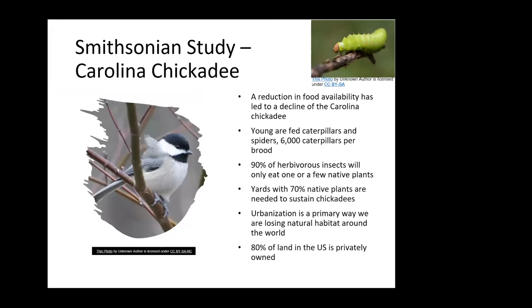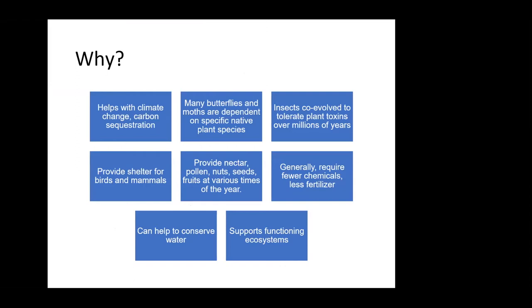Another reason to use native plants is it helps with climate change, and having trees matters too. We talked about butterflies and moths being dependent on specific native plants — they co-evolved over a long period of time. These native plants provide shelter for birds and mammals, and they provide nectar, pollen, nuts, seeds, and fruits at different times of the year. They generally require fewer chemicals and less fertilizer, help conserve water, and overall support functioning ecosystems that have evolved over a long period of time.